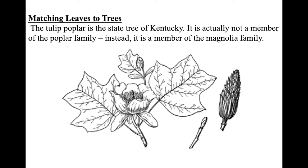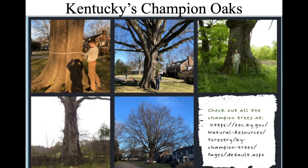Our state tree is the Tulip Poplar tree, and this is what the leaves look like. They have anywhere from four to six little points, they're sort of thick and wide, and they have these white blossoms. This is what the seeds and a little seedling, or seed pod, looks like. Now, it's called the Tulip Poplar but it's not in the poplar family — it's actually sort of in the Magnolia family.